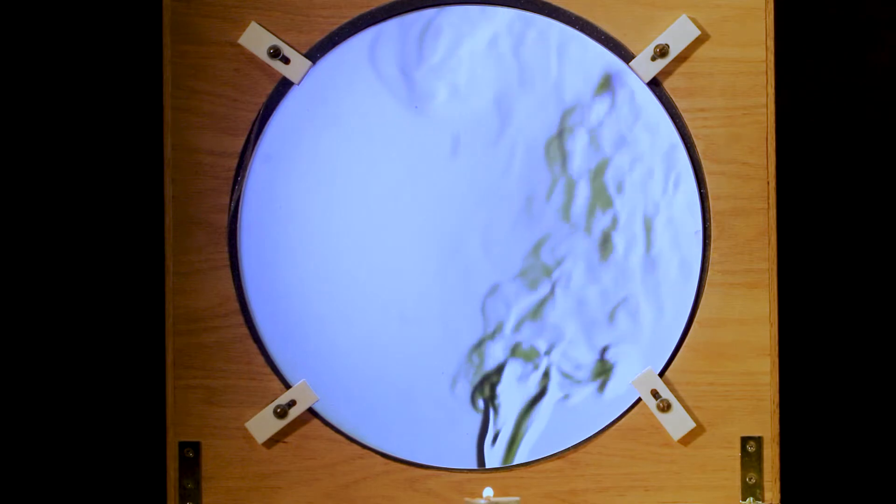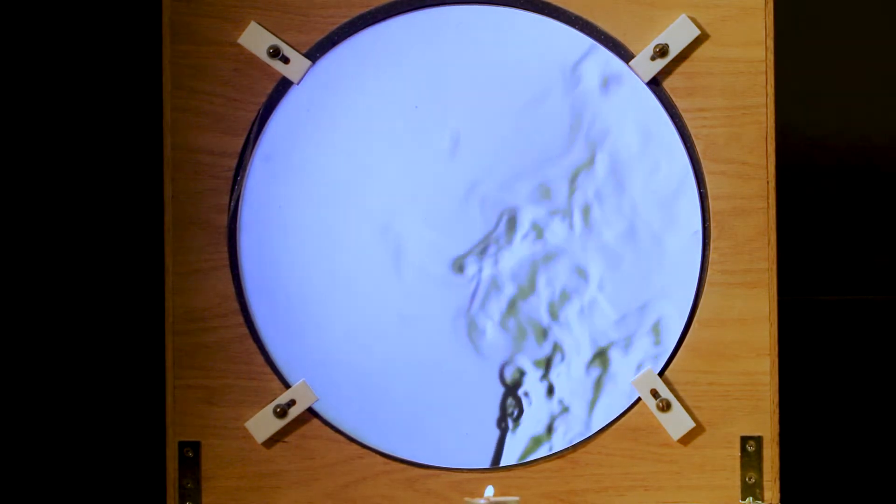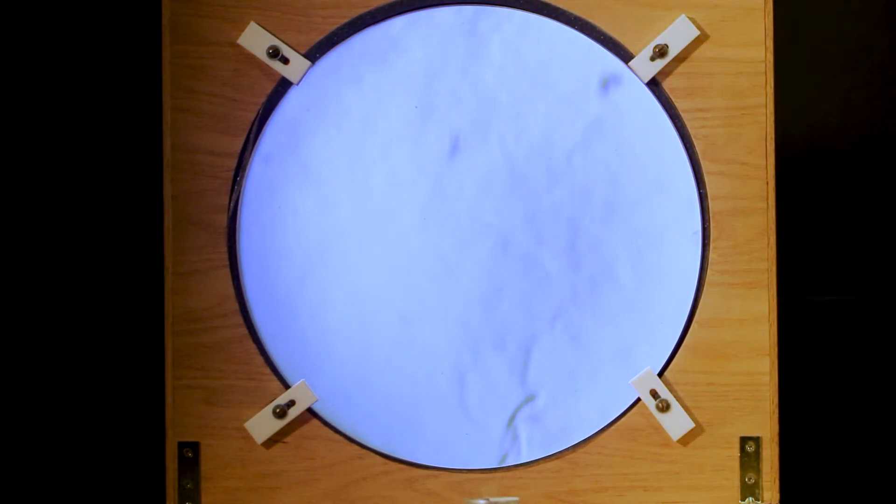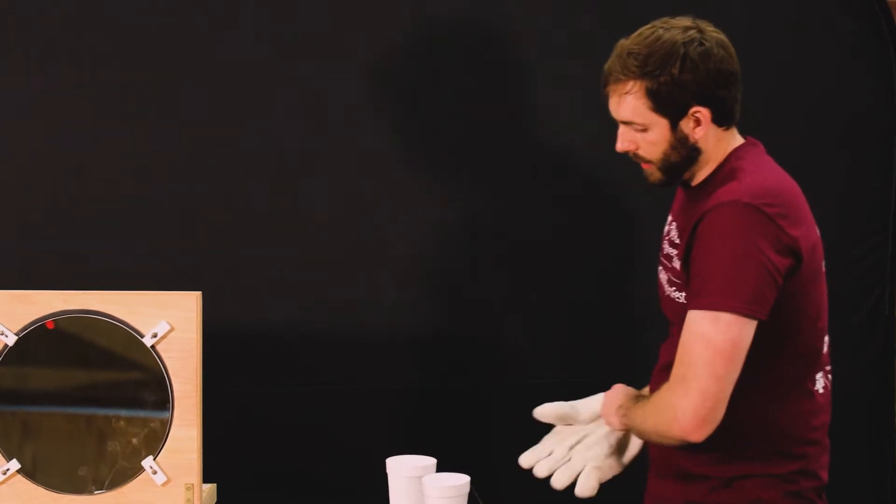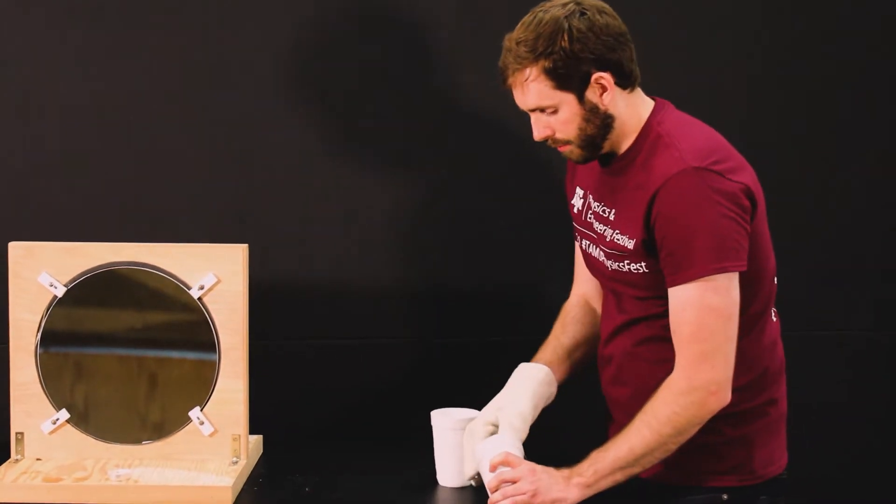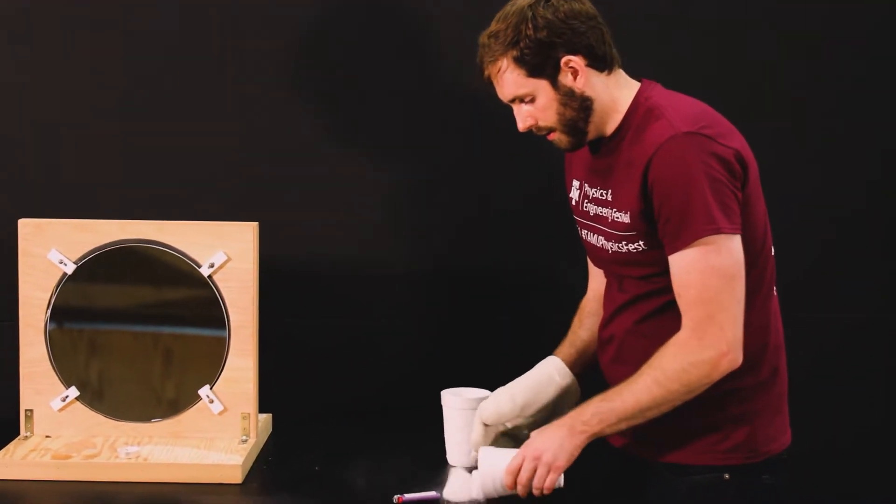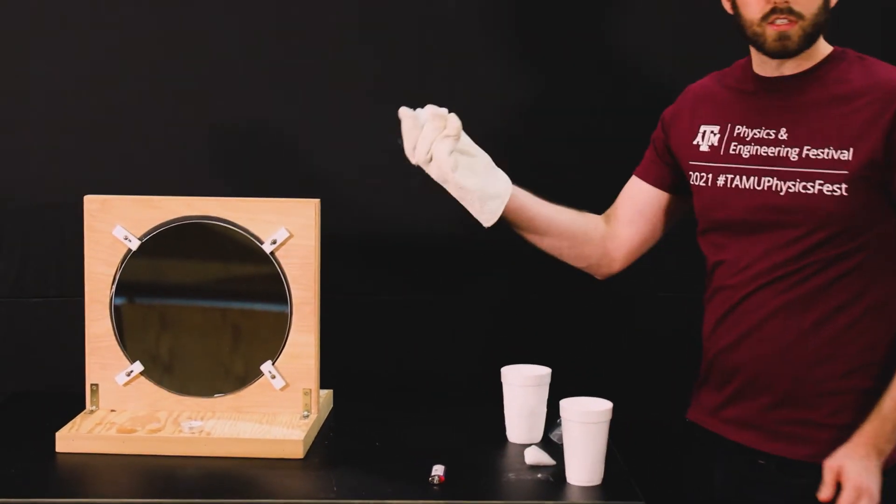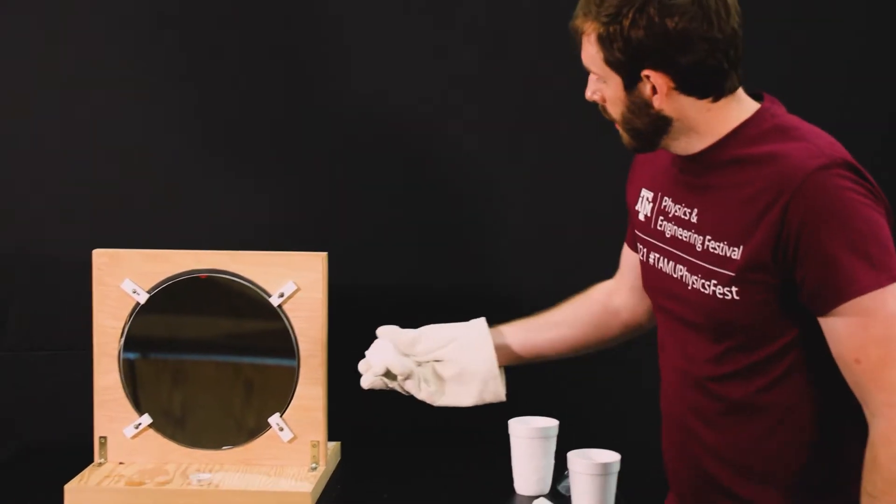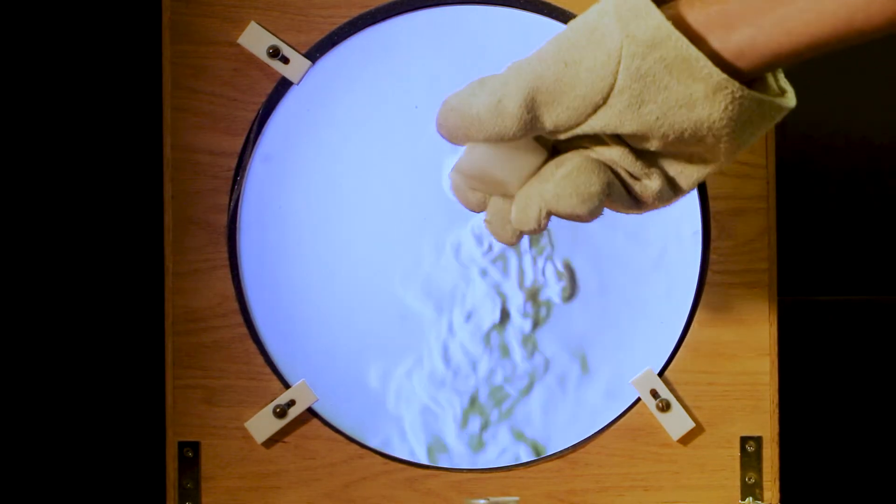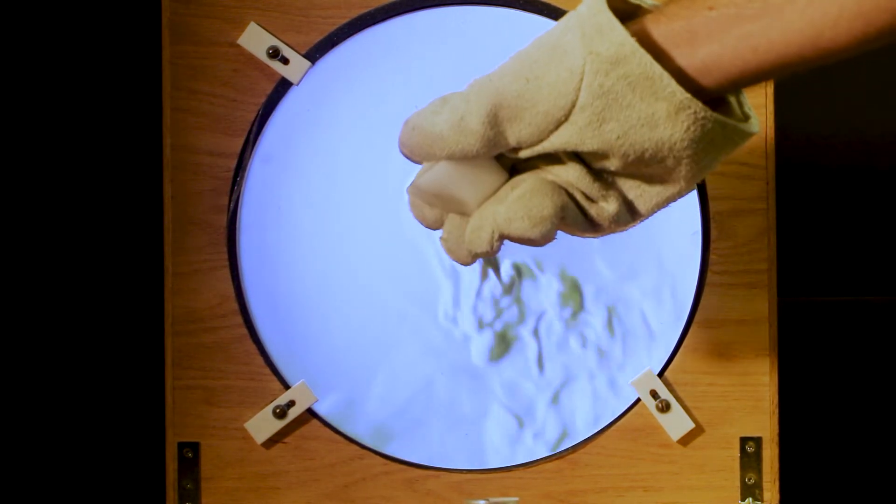But we don't just visualize hot air, we can also visualize cold air falling. For example, here I have some dry ice. If I take a chunk of this dry ice, which is just solid CO2, and I hold it in front of the mirror, you should see cold air sinking off of it.